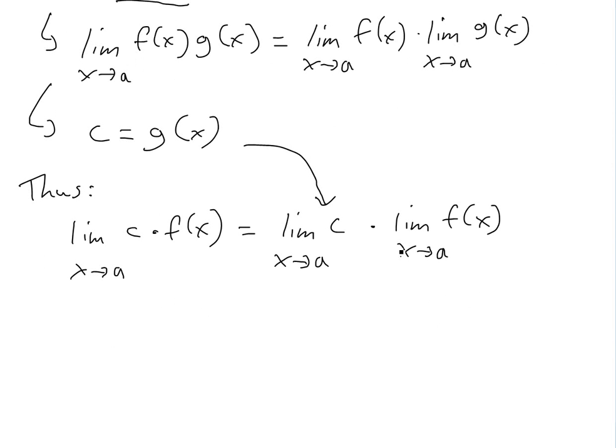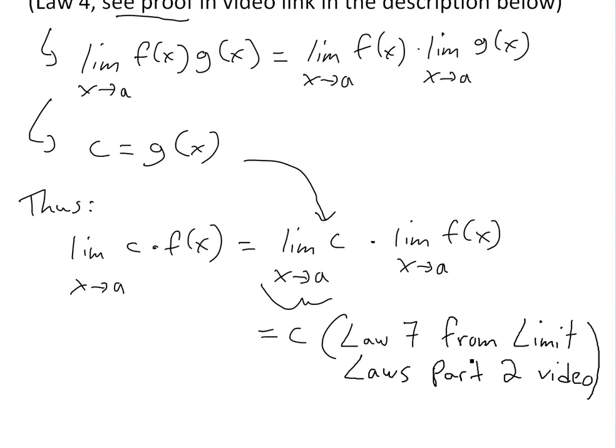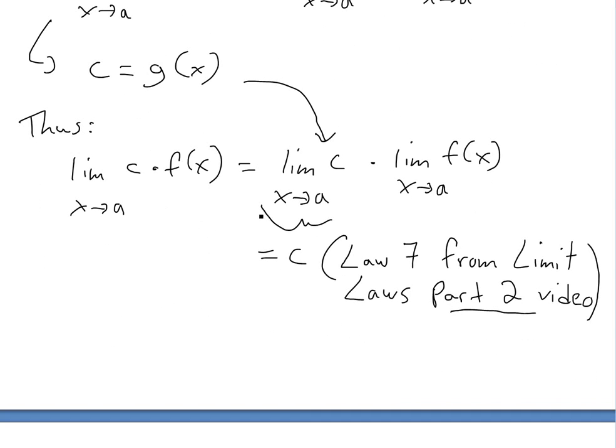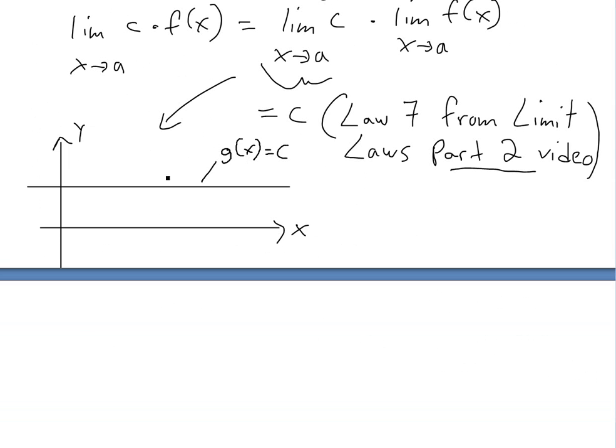So now this is our g(x) right here, and so now we have this formula right here. And this one here, the answer to this one just equals to c. This equals c, and this one's actually Law 7 from the limit laws part 2 video, which I go over. But the proof of this one is just pretty straightforward. All you can do is look at the graph. When you look at the graph here, if you have g(x) equals to c, this constant, this difference is c right here.